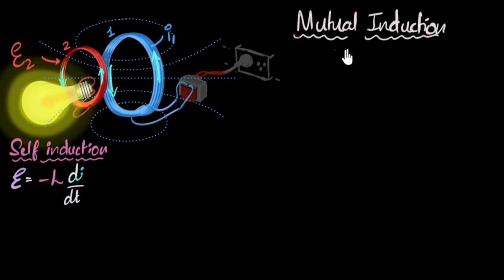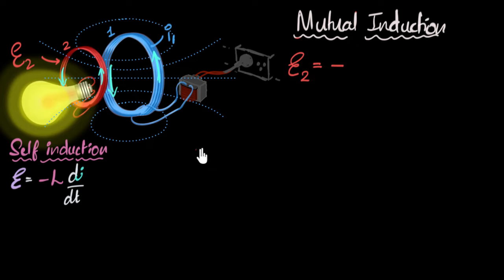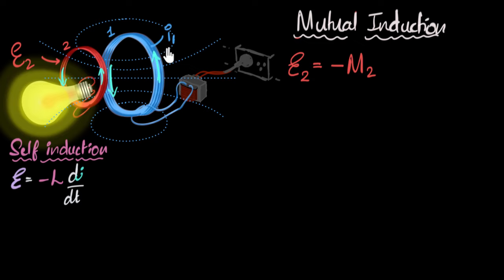Now let's write an equation for mutual induction. It's going to be very similar to the self-induction equation. We're talking about the EMF in the second coil, so EMF E2 equals minus — here we'll introduce a new constant called mutual inductance. The induction is happening in the second coil, so we write minus M21 times DI over DT. But which DI over DT? It's the rate of change of the current of the first coil — that's the whole idea behind mutual induction. EMF is induced in the second coil due to the current changing in the first coil, so we write DI1 over DT.